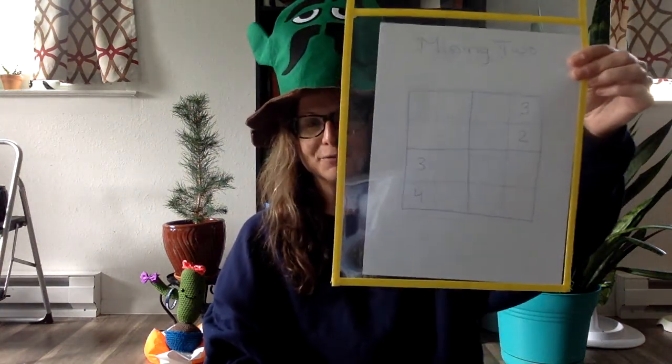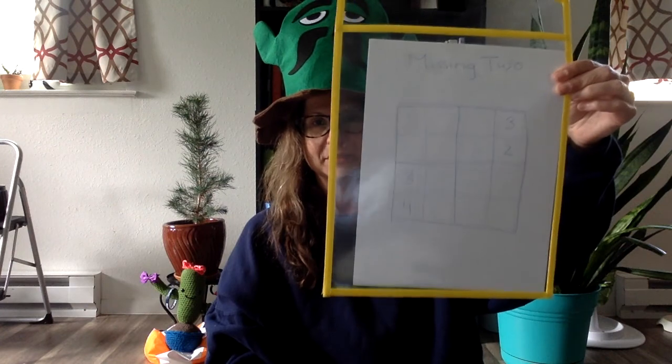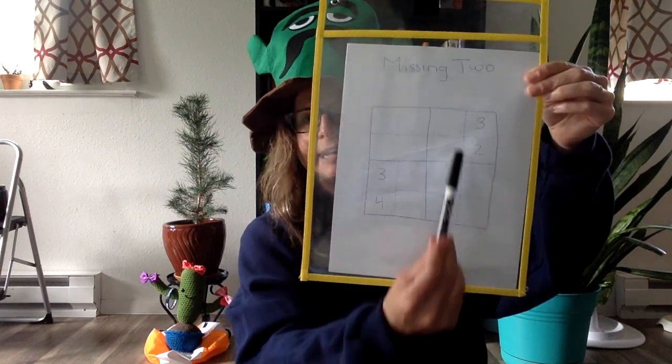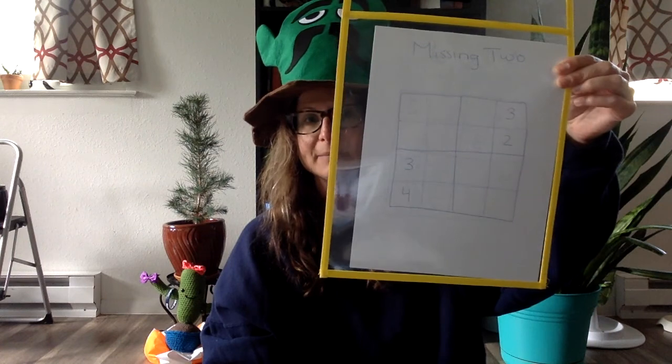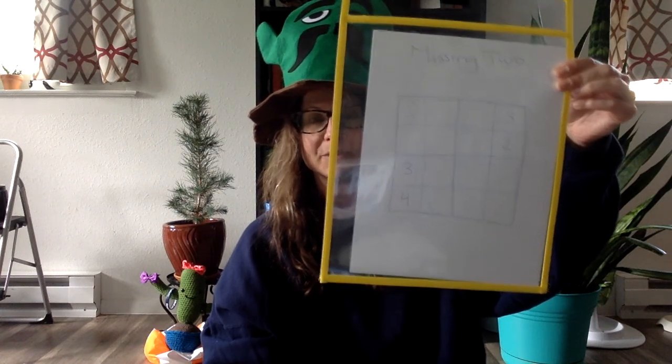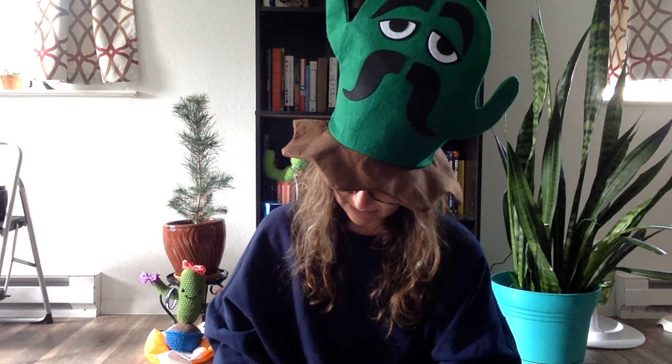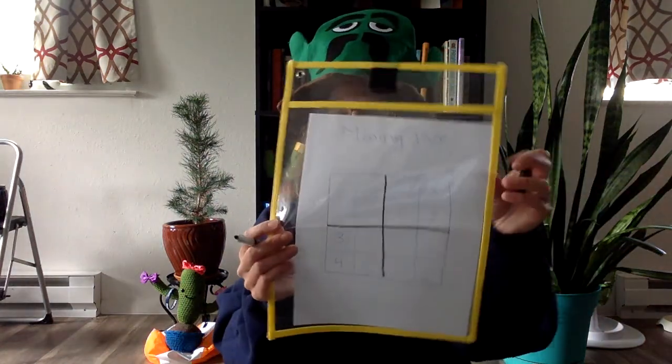So this is a Sudoku 4 puzzle. What I would look at is rows, columns, or sections that are only missing 2 numbers. But first it's hard for me to see where the sections are, so I'm going to draw in that line. And no, it's not because I'm old.